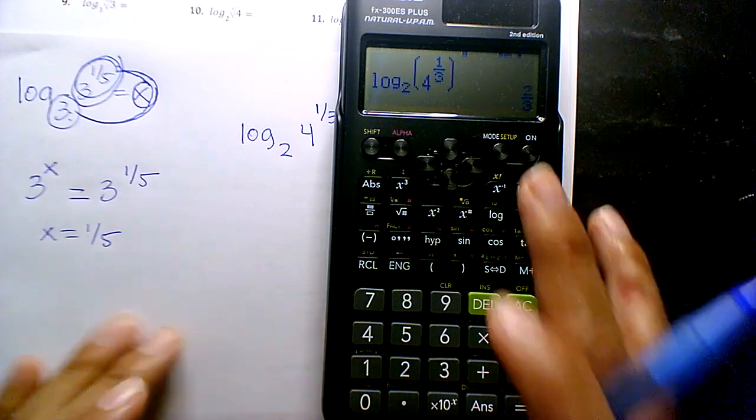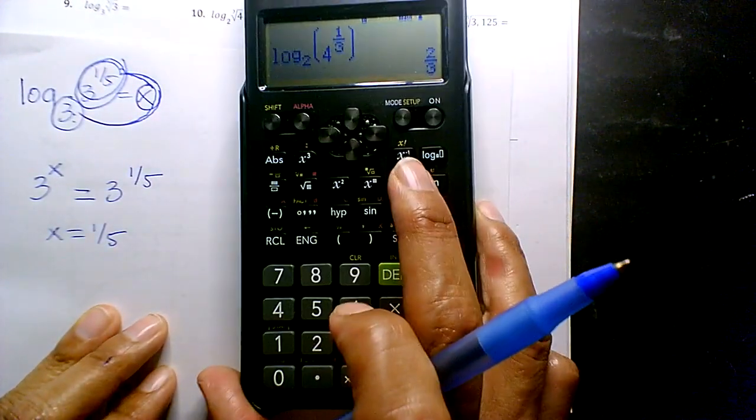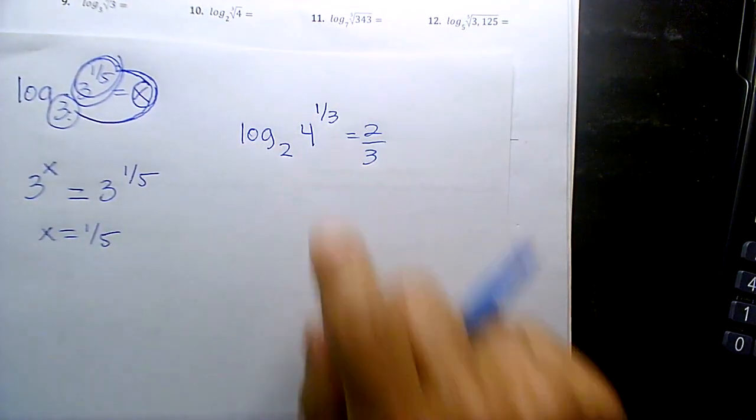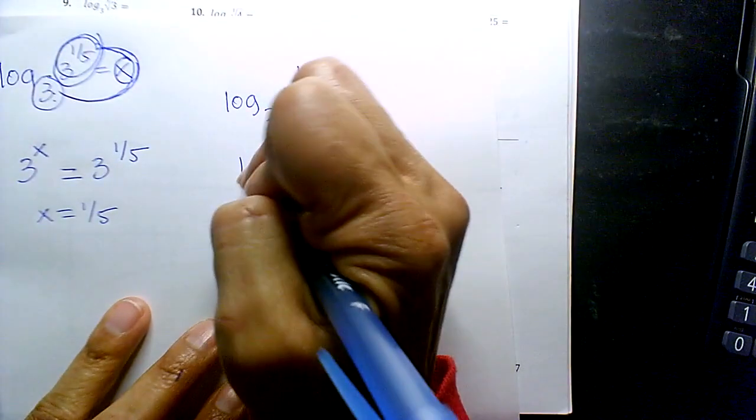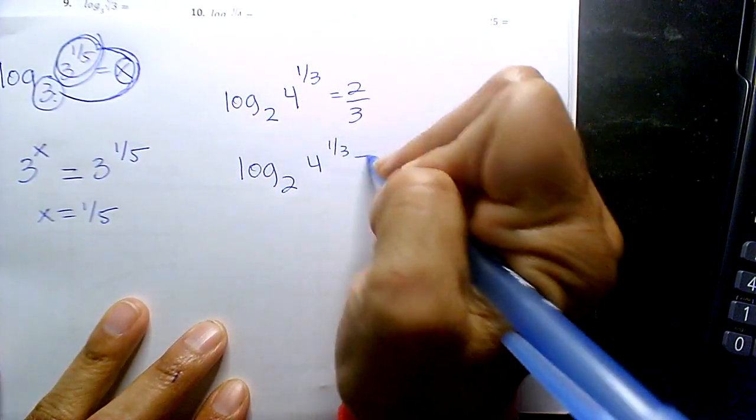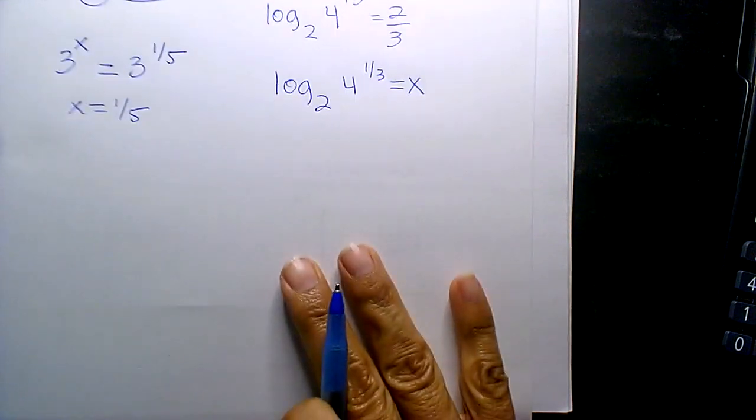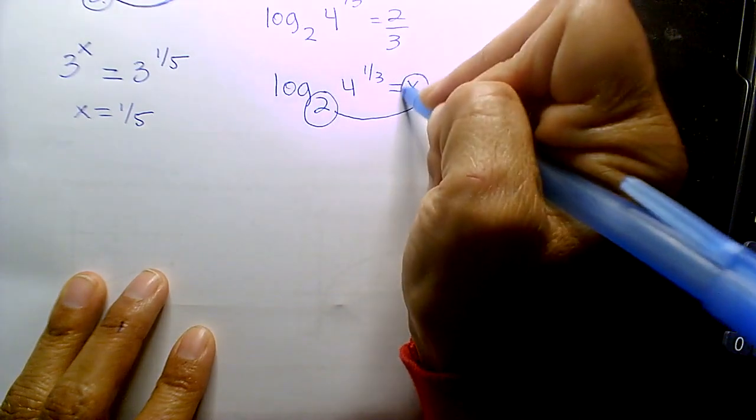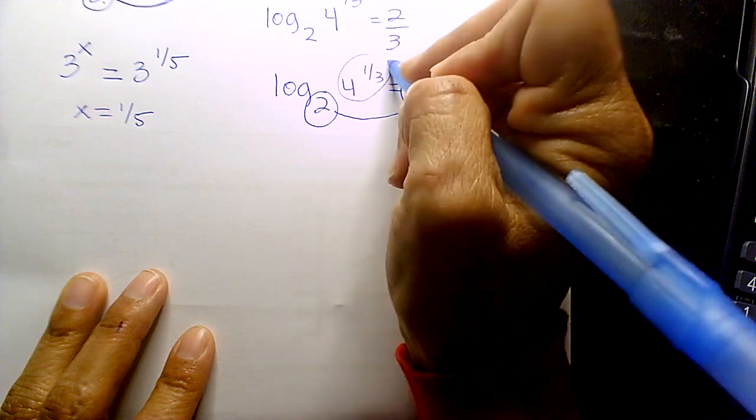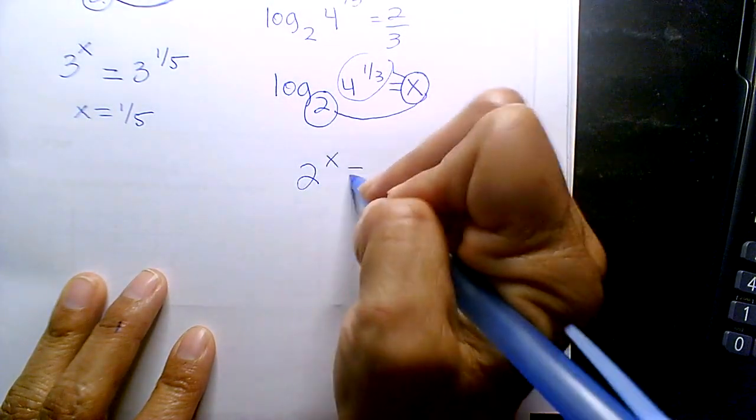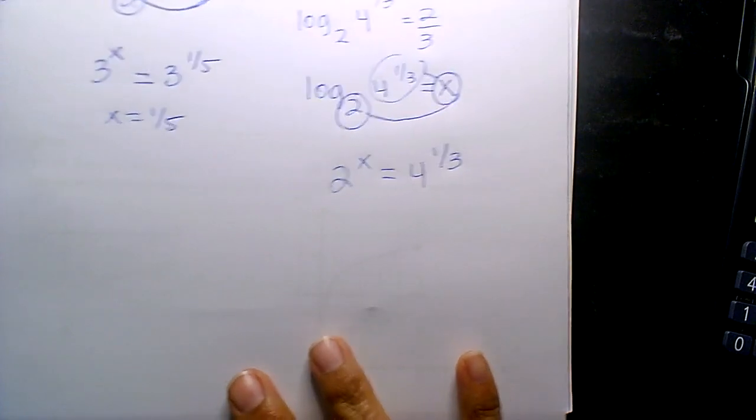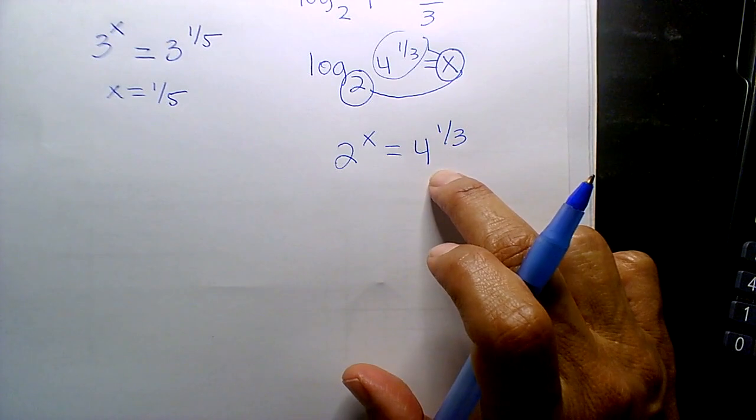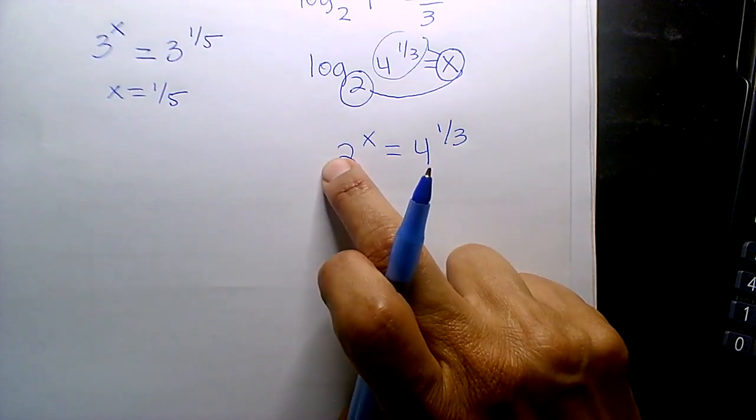All right, but if you wanted to rewrite that in exponential form, let's rewrite this. I have a 2, it's to the x exponent, equal sign, and then here's my argument. So 2 to the x is equal to 4 to the one-third. All right, you guys did same basis solving for exponents. Can 4 get rewritten to match that 2? What would it be?